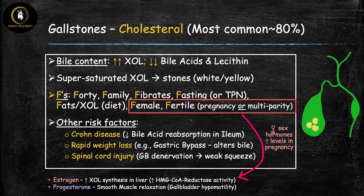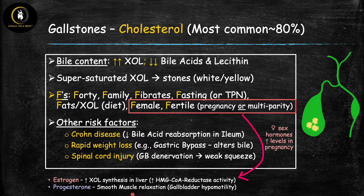Estrogen and progesterone act through two distinct mechanisms. Estrogen increases cholesterol synthesis in the liver by upregulating HMG-CoA reductase, the rate-limiting enzyme in cholesterol synthesis. Progesterone, on the other hand, is a natural smooth muscle relaxant — it relaxes the smooth muscle in the gallbladder wall, leading to gallbladder hypomotility, the weak squeeze problem, which causes bile stasis and cholesterol gallstone formation. These are completely different mechanisms and important to distinguish.